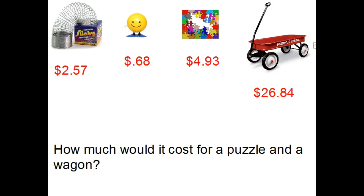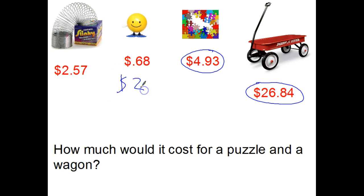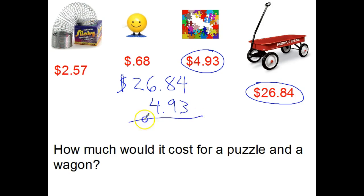Let's try another one. How much would it cost for a puzzle and a wagon? The wagon is $26.84. Make sure when I put the puzzle underneath, I line up the decimal points like buttons on the shirt. How much would it cost for a puzzle and a wagon? If I'm buying both of them, it's sort of like when you go through the checkout line at the store — beep, beep — as it uses the barcode scanner. They're adding them together to get a total price.